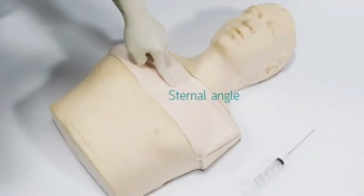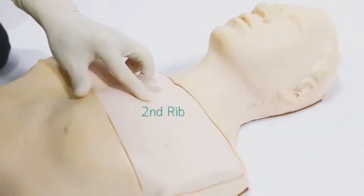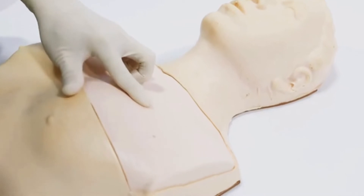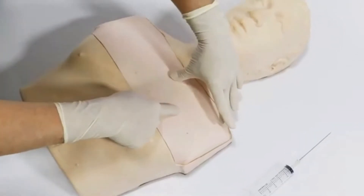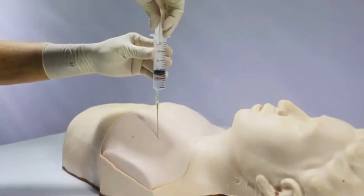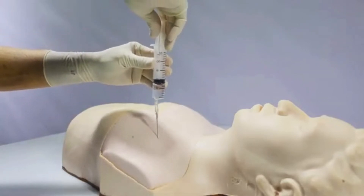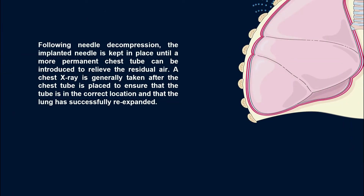In an emergency situation, a tension pneumothorax can be decompressed or quickly converted to a simple pneumothorax by inserting a large bore needle at the second intercostal space mid-clavicular line on the affected side. This relieves the pressure and vents the positive pressure to the external environment. Following needle decompression, the needle is kept in place until a more permanent chest tube can be introduced. A chest x-ray is generally taken after the chest tube is placed to ensure it is in the correct location and that the lung has successfully re-expanded.